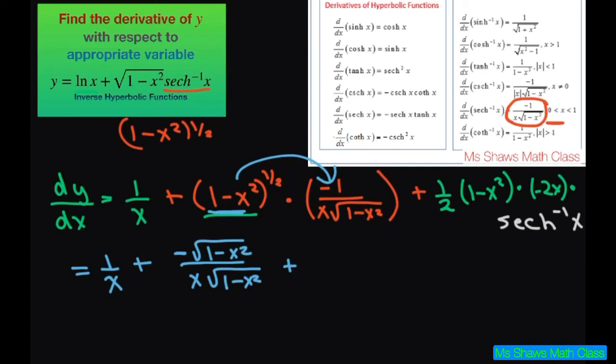For the second piece here, this is going to be the 2's cancel, and let's see, this should have been negative 1 half, so sorry about that. So this is going to be x divided by square root, and it's negative because we have this negative right here.